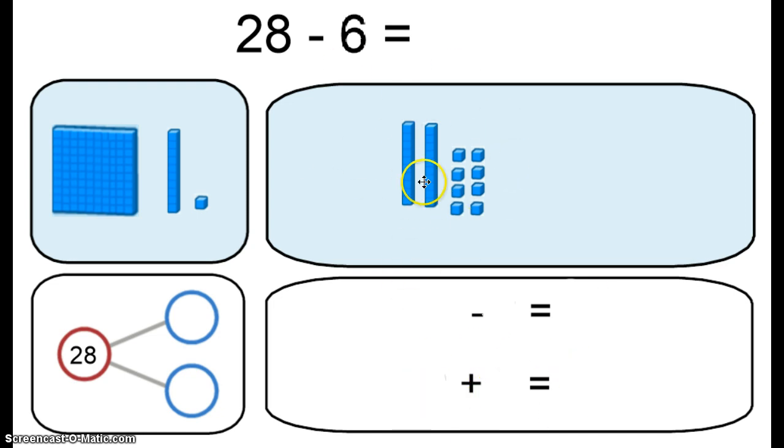Well, let's take a look, here's our 28, that's 2 tens and 8 ones, and I want to take away a total of 6 ones. So where am I going to take those 6 ones away from? From the tens? No. I'll take them away from the ones, so here's 1, 2, 3, 4, 5, and 6.